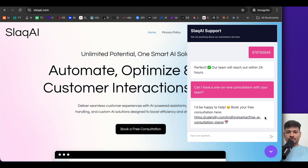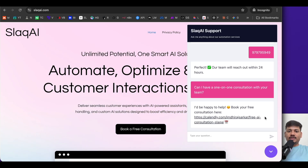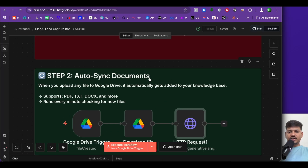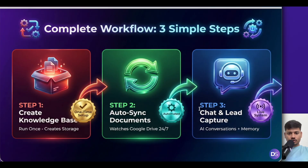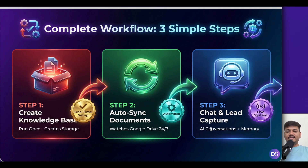If you're a business owner, you can implement this on your own website. Or if you're learning AI automation, you can get this done for any business. The overall workflow has three important steps. Step one: creating the knowledge base by uploading documents. Step two: auto-fetching documents from a Google Drive folder and uploading them to the knowledge base. Step three: the actual AI agent where you can chat and get answers.